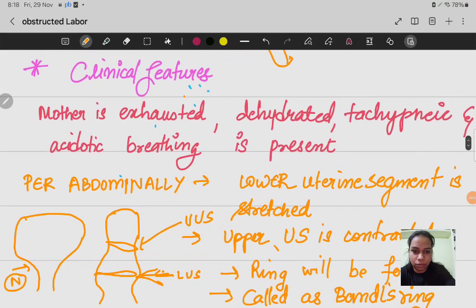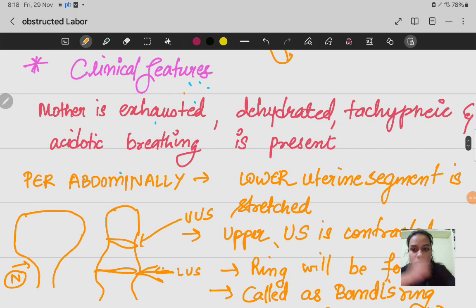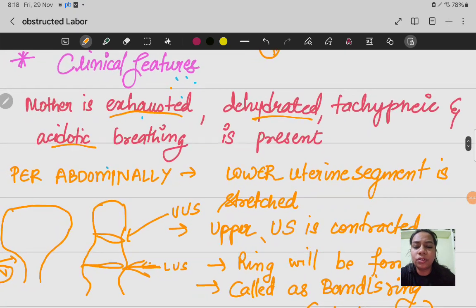Next we will see the clinical features. When mother is exhausted already, she is trying hard for delivery and the baby is not coming out for hours. She is exhausted, dehydrated, having tachypnea. She is breathing heavily when pushing out the baby, getting acidotic breathing.